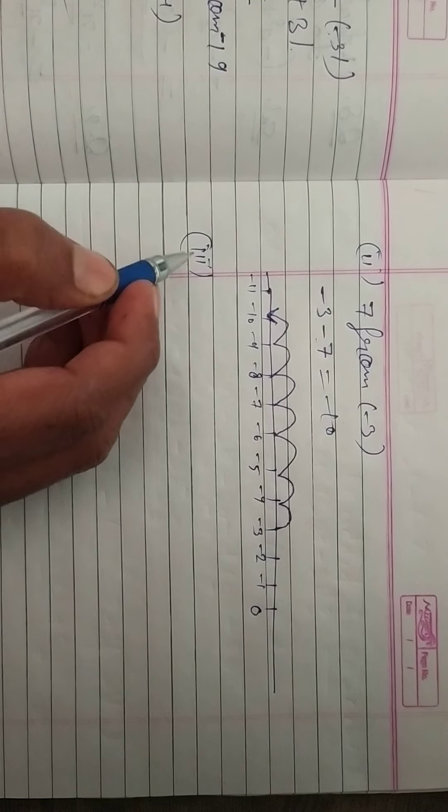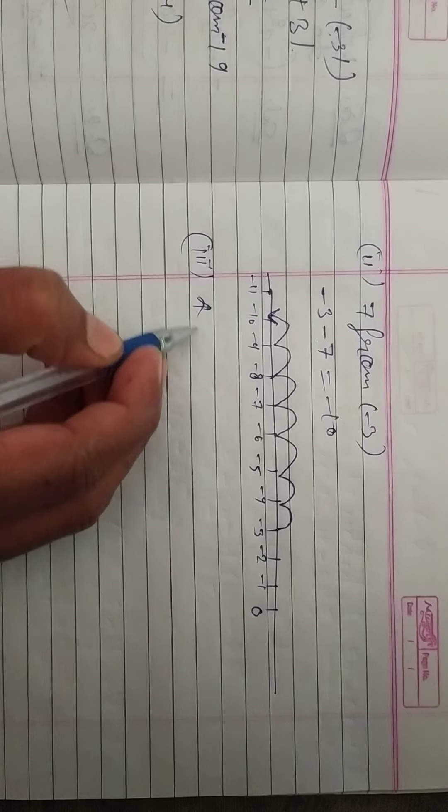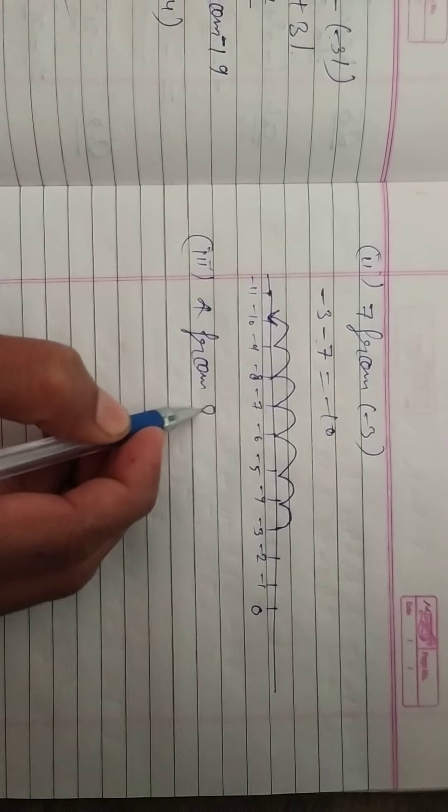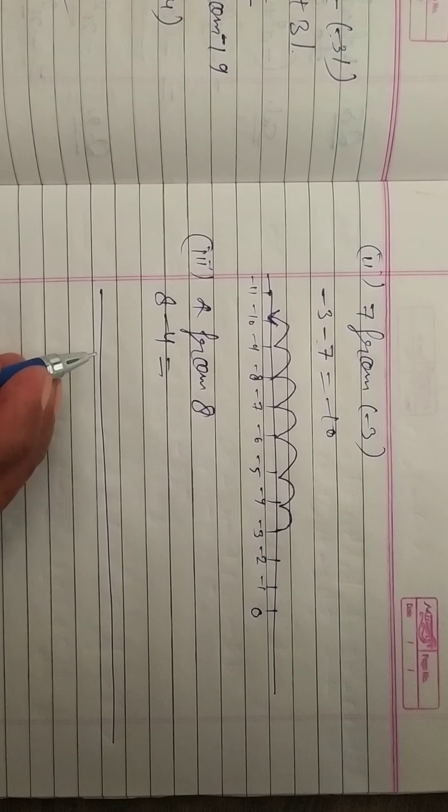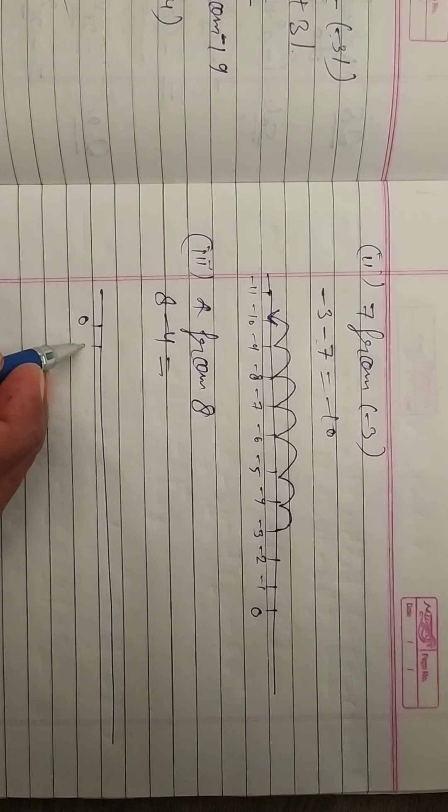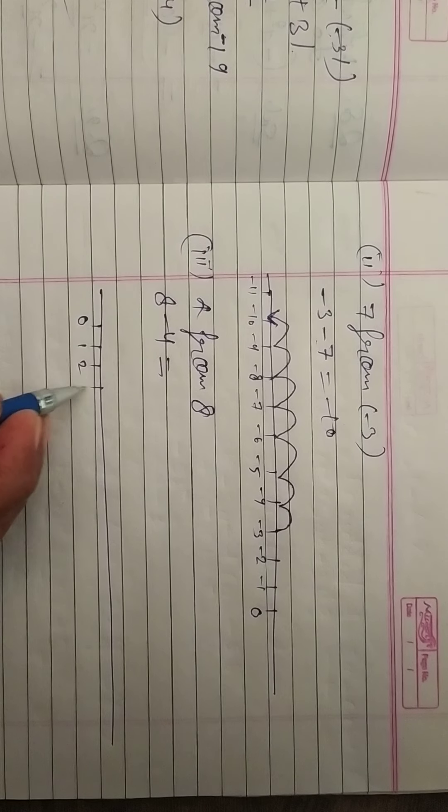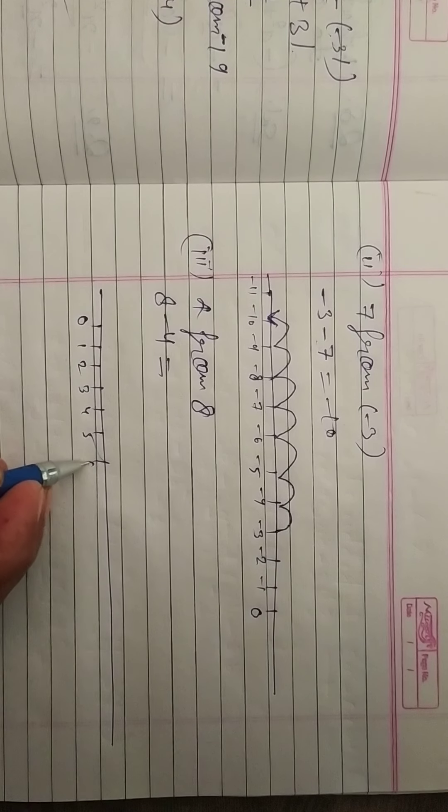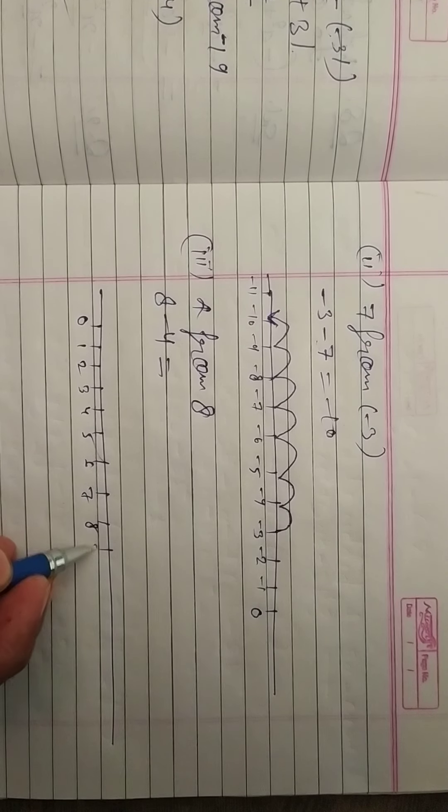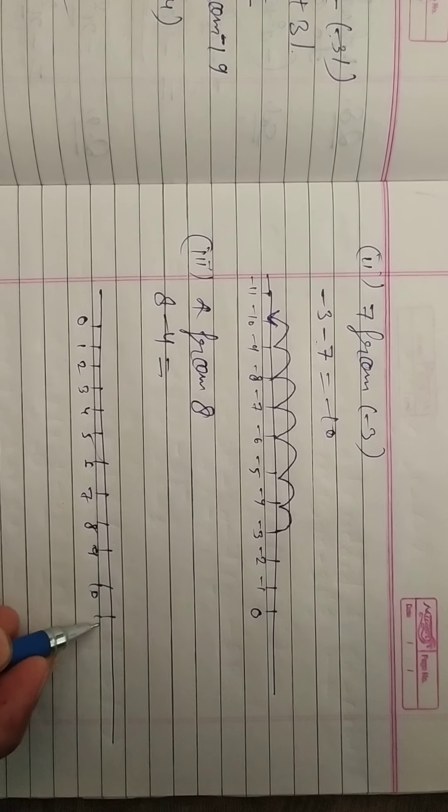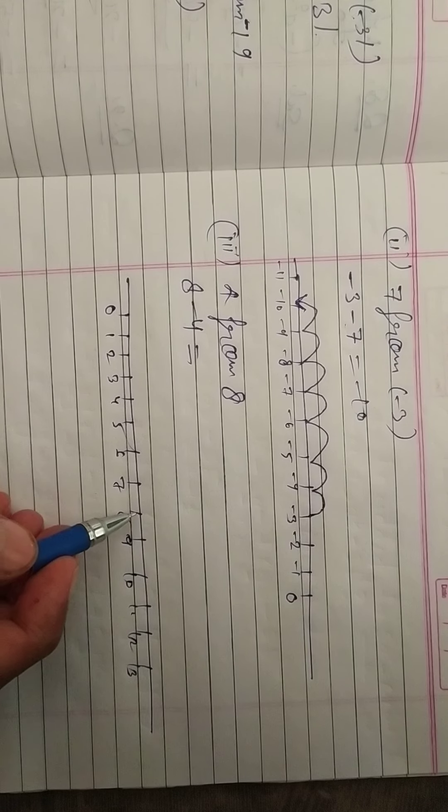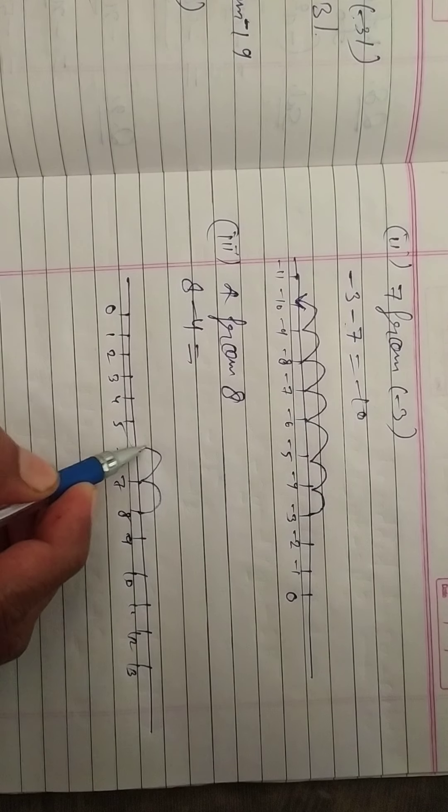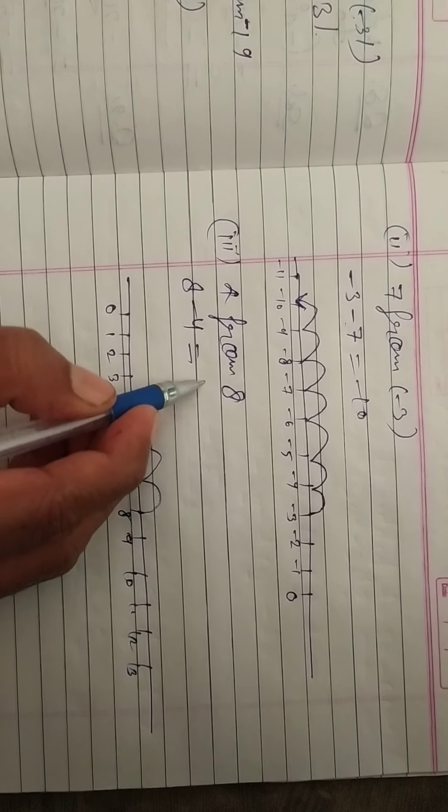Question number 3 is 4 from 8. So 8 will subtract 4, so 8 minus 4 will be here. So what do we do? Number line to do. 0, 1, 2, 3, 4, 5, 6, 7, 8, 9, 10, 11, 12, 13. Okay. Now, what do we do? 8 will be here. 1, 2, 3, 4. Here we go. Where do we go? 4. So what answer will be 4? We go.